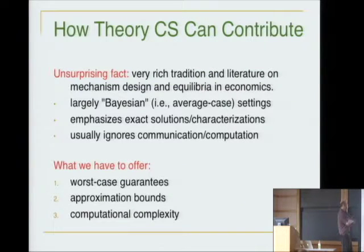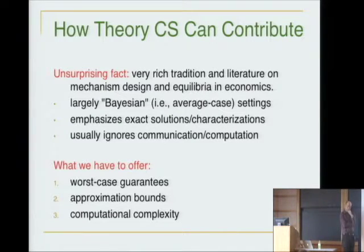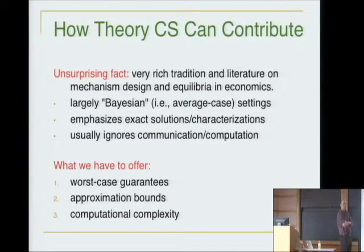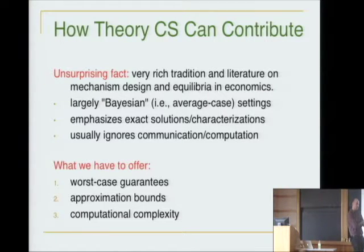I'm going to talk about how intractability arises in algorithmic game theory. The motivating application domains are mostly game-theoretic equilibria and computing them, and the design of things like auctions. These are topics economists have thought about a lot, and there's a lot of beautiful theory. So a sanity check: what can theoretical computer science contribute in these domains?